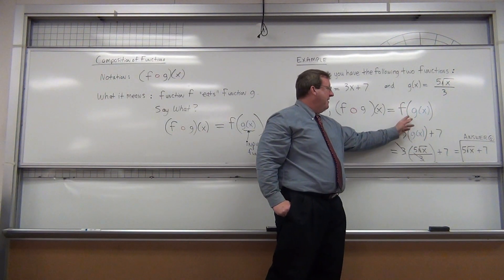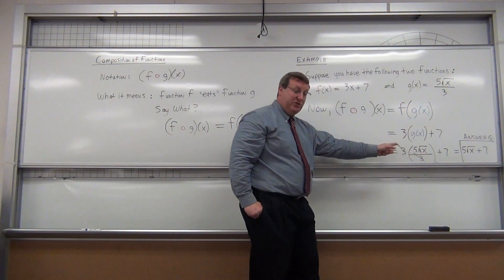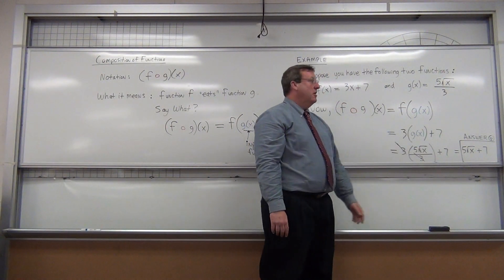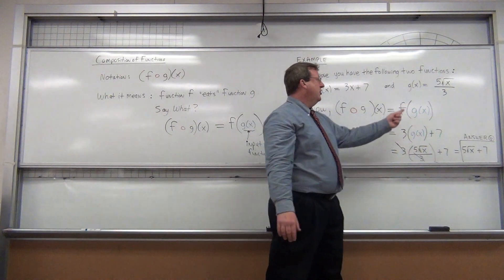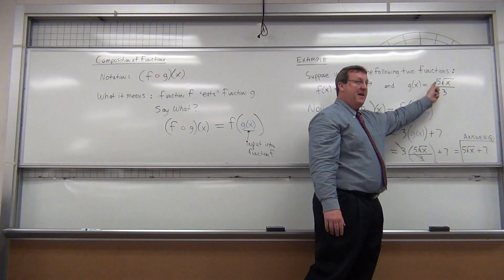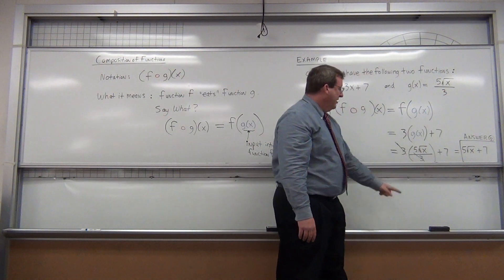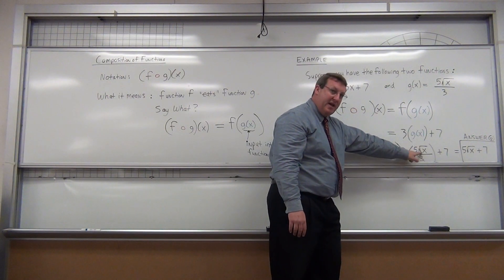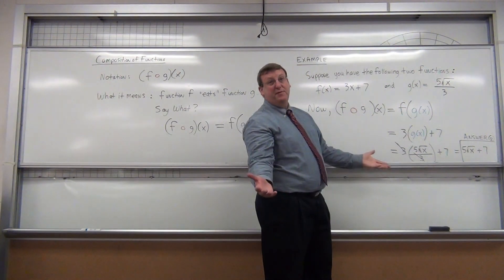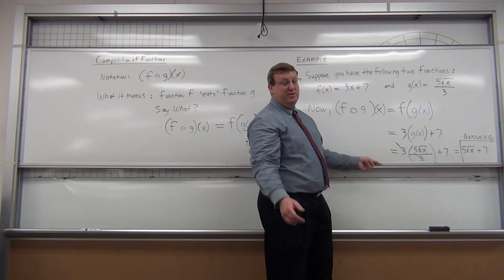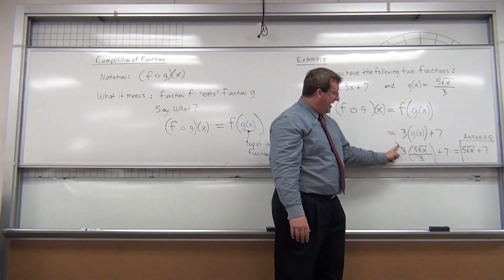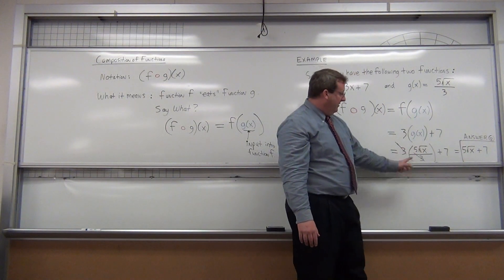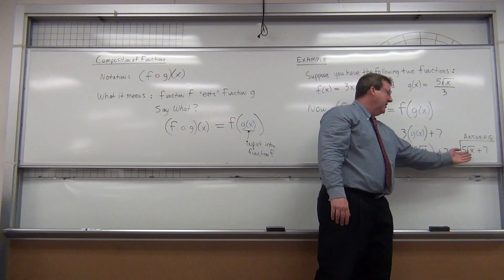it triples it and adds seven. So, if you had f of g of x, it's literally going to triple g of x and add seven. Well, do you know what g of x is? Sure, they give you both functions. It's five-thirds square root of x. So, you plug in, you substitute for g of x, you put five-thirds square root of x. Now, to simplify it, like all math questions usually want you to do, take the three and multiply it. So, it cancels out the three here. The final answer, five square root of x plus seven is right here.